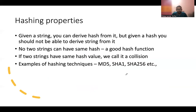These are the properties of hashing. You can derive the hash from the string, but given a hash, you will not be able to derive the string from it. No two strings can have the same hash value — this is called a good hash function. And in case two input strings result in the same hash value, we call it a collision.